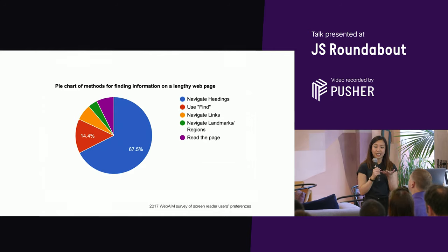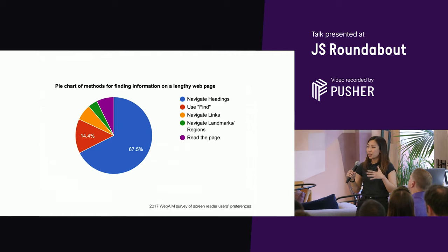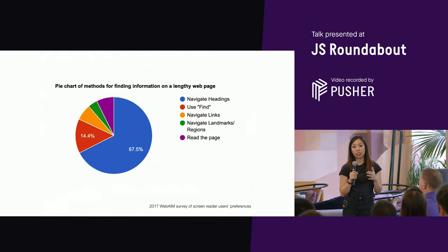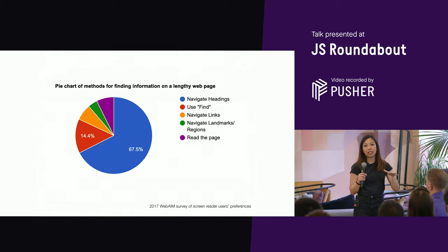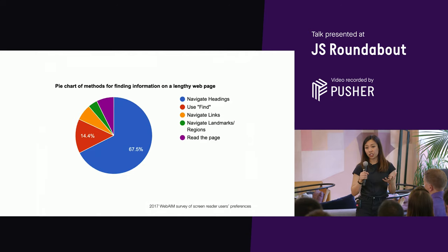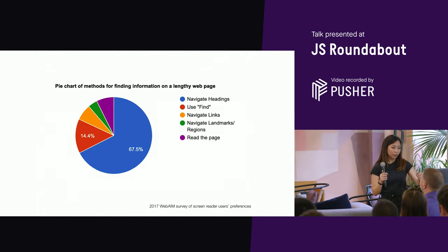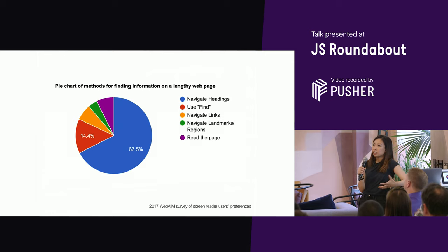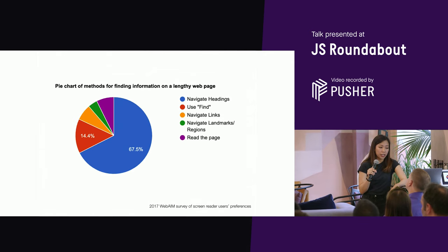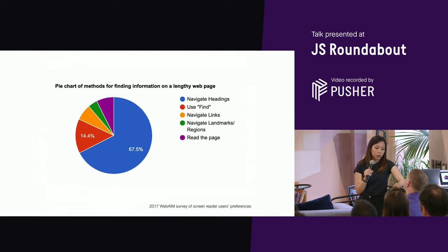This is very similar to what a sighted user does — you scan a page for big or bold text to get an idea of what each section contains. Make sure your headings are used correctly. You can convey the same hierarchy to screen reader users by using the correct h tags and not skipping levels, because it paints a picture of the page structure. Headings allow assistive technologies to quickly navigate the page.